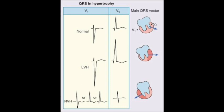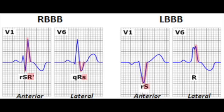Step five: evaluate the QRS complex — narrow versus wide. Normal is under 120 milliseconds. If narrow, there is no bundle branch block. For left bundle branch block: in V1 you see an rS pattern (large dip down), broad slurred R wave in V5 and V6, deep S wave in V1, possible ST elevations in V1-V3, and a wide QRS.